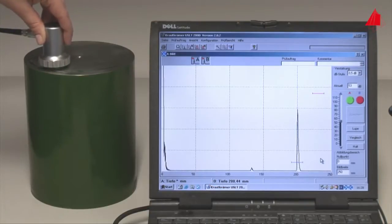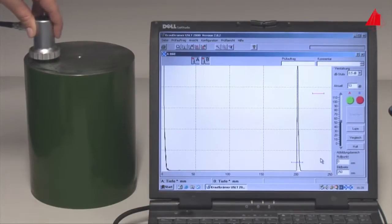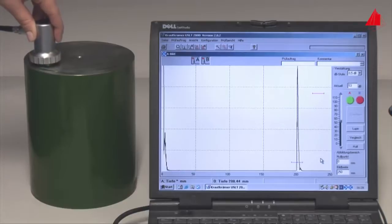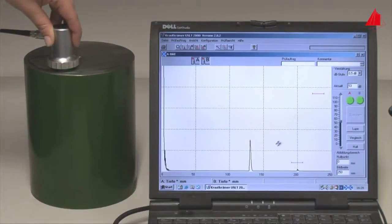And here we go: the material tester scans the upper front end of the cylinder with a probe and observes the monitor. A defect echo appears on the monitor. This defect is located in a depth of 130 millimeters below the surface.